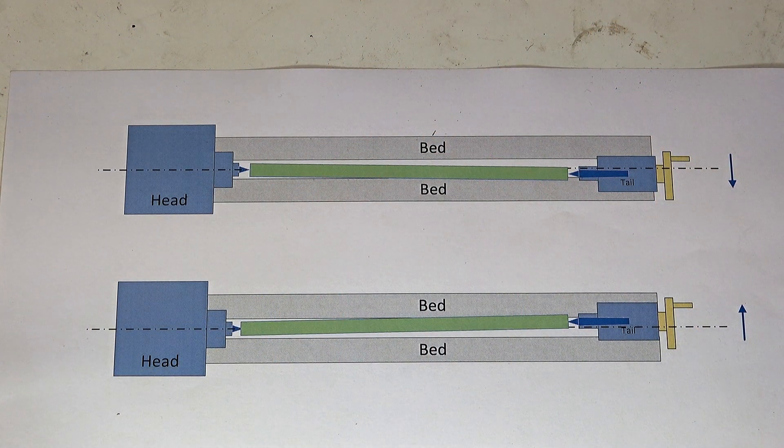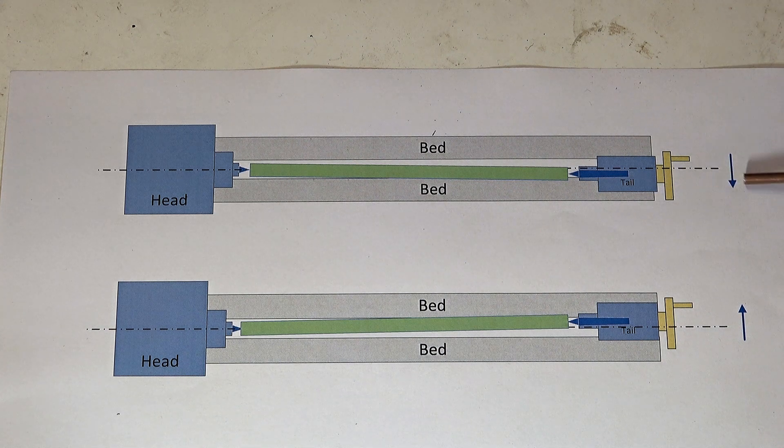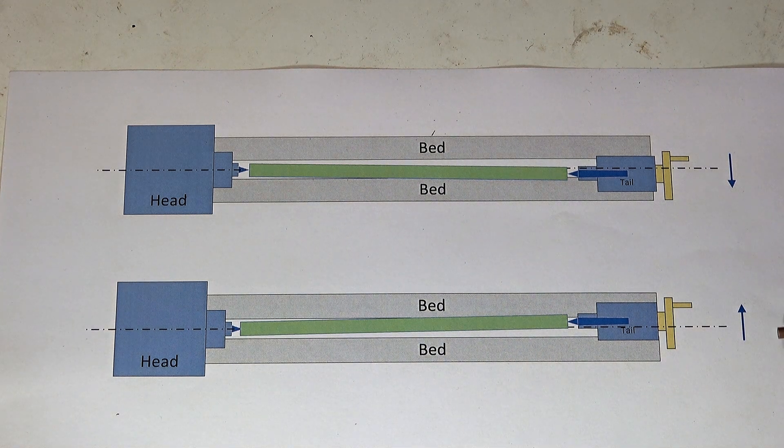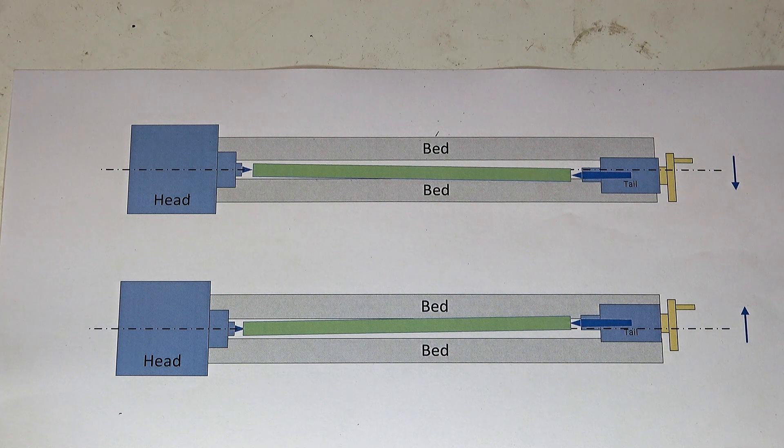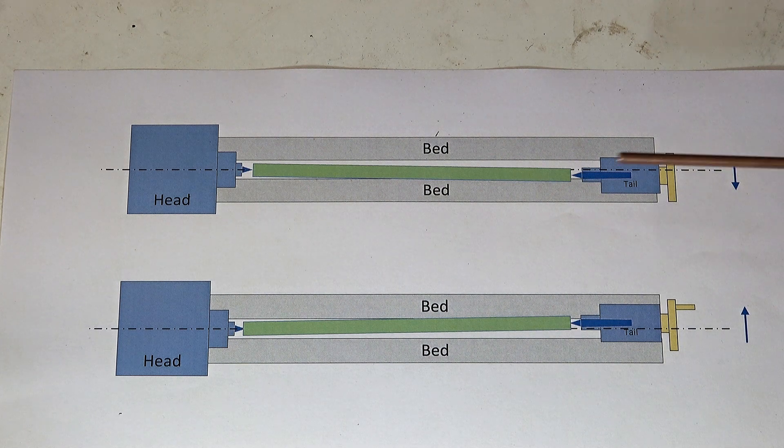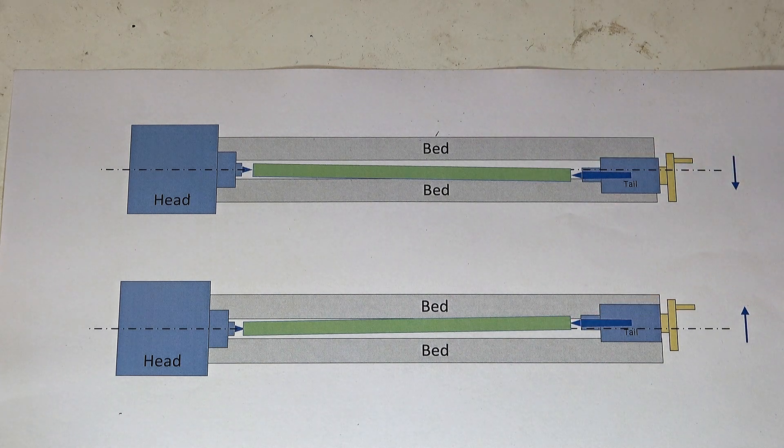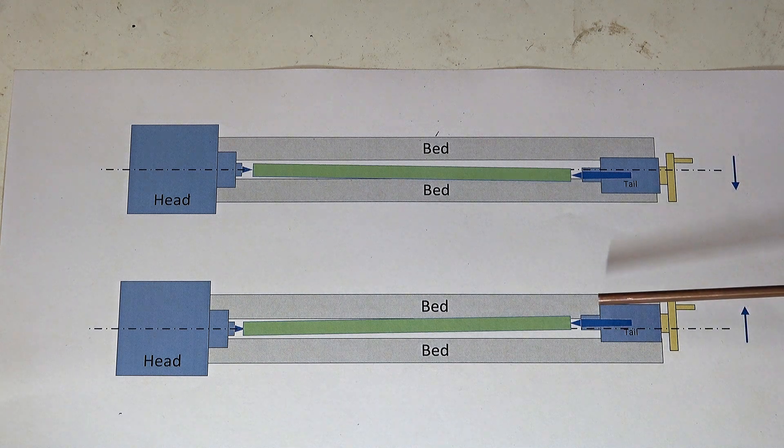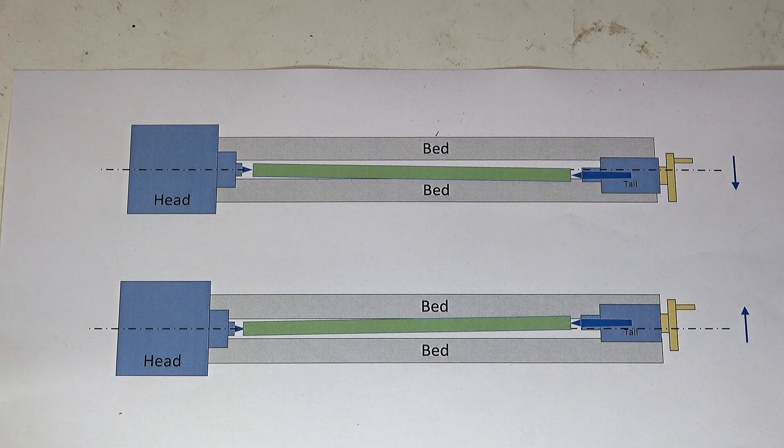Here I'm showing the two possibilities where the tailstock is out of line with the headstock. In the top diagram the tailstock is towards the operator and in this diagram the tailstock is away from the operator. And in both cases the work which is green is out of line and the result in both cases is that it will turn a taper as long as you take off enough material to skim the whole surface.